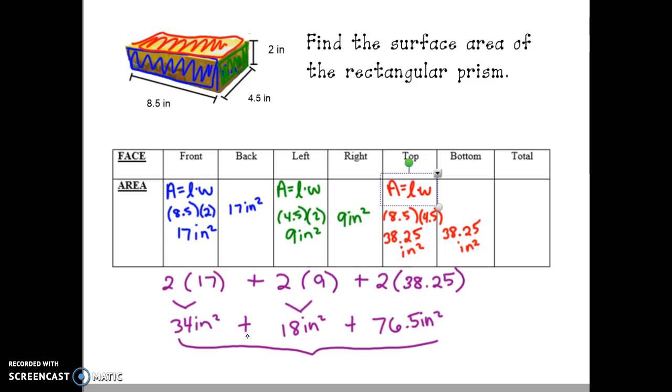When we add these three values together, we get 128.5 square inches for the total area, otherwise known as the surface area. So the surface area of the prism is 128.5 square inches.